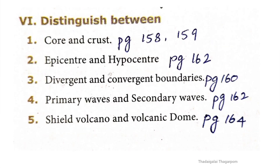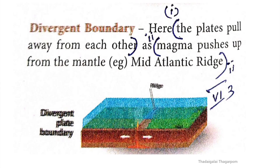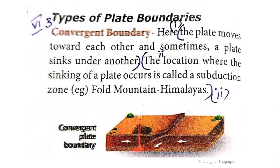Third point: divergent and convergent boundaries. Answer given in page 160, types of plate boundaries. Divergent boundaries: the plates pull away from each other; magma pushes up from the mantle — example, Mid-Atlantic Ridge. Convergent boundaries: plates move toward each other; sometimes a plate sinks under another. The location where sinking occurs is called a subduction zone — example, fold mountains, Himalayas.